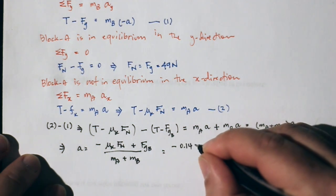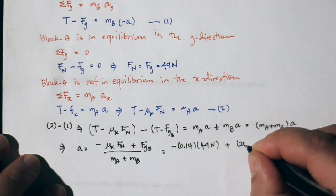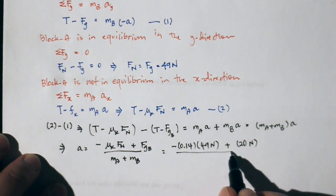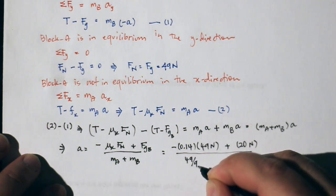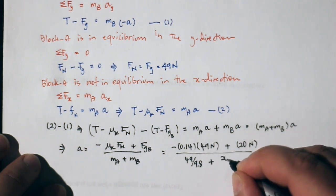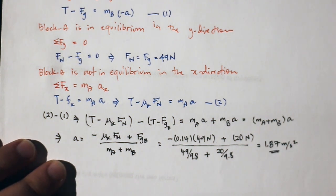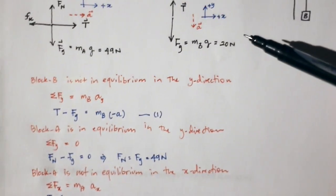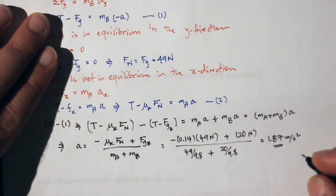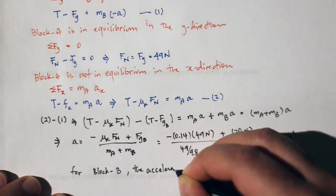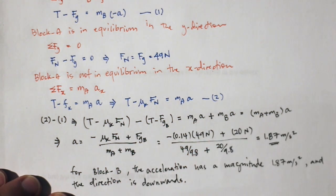Plugging in the numbers — noting that mass of A = 49/9.8 and mass of B = 20/9.8 — the result is 1.87 m/s². Since the value is positive, my assumption that the acceleration of B is directed downward is correct. Therefore, box B has an acceleration of magnitude 1.87 m/s² directed downward.